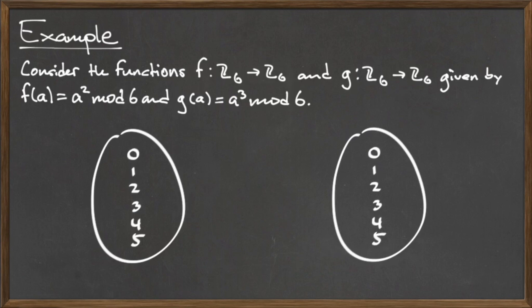Because the domain and codomains for these functions are finite, we can express them in the following diagram. The elements on the left are from the domain, and the elements on the right are from the codomain. Since the codomain and domains for both of these functions are the same, Z mod 6, the elements in both are the same.